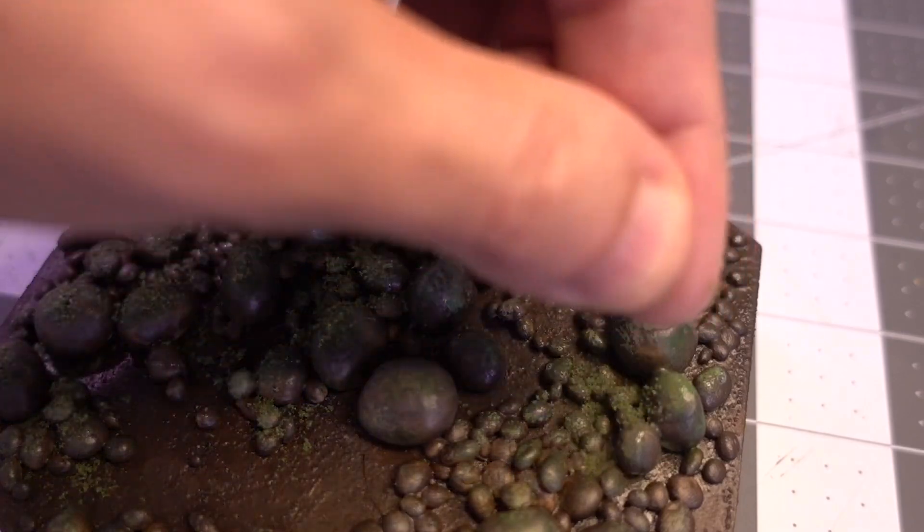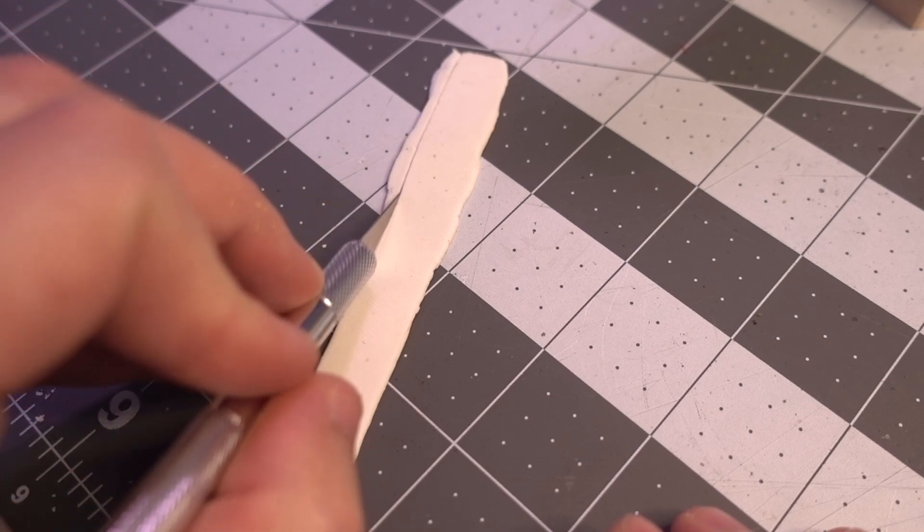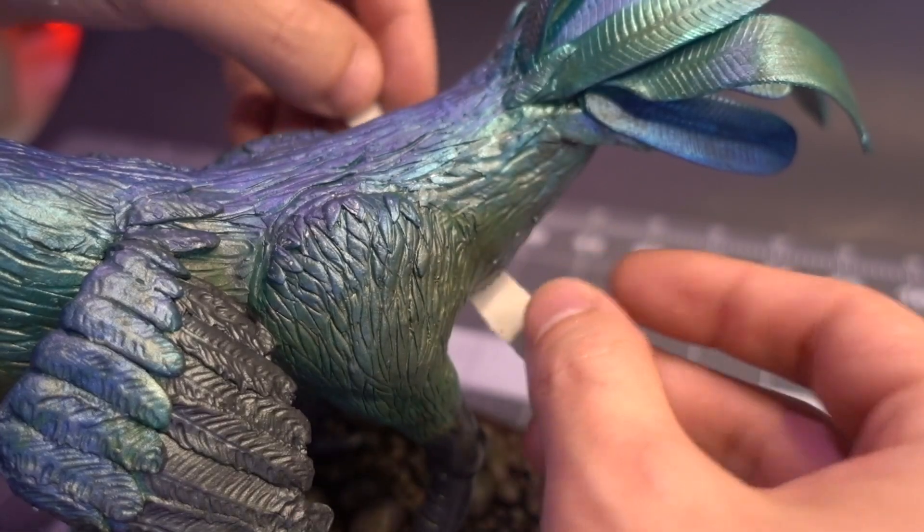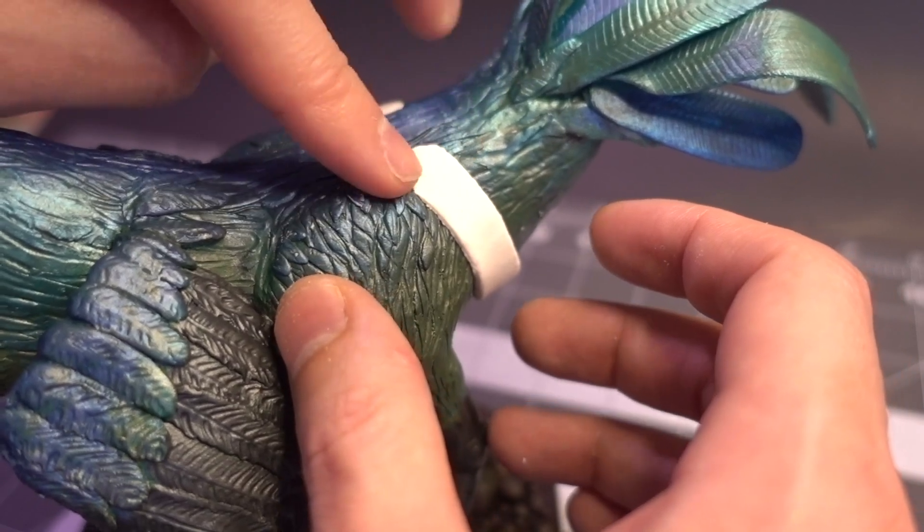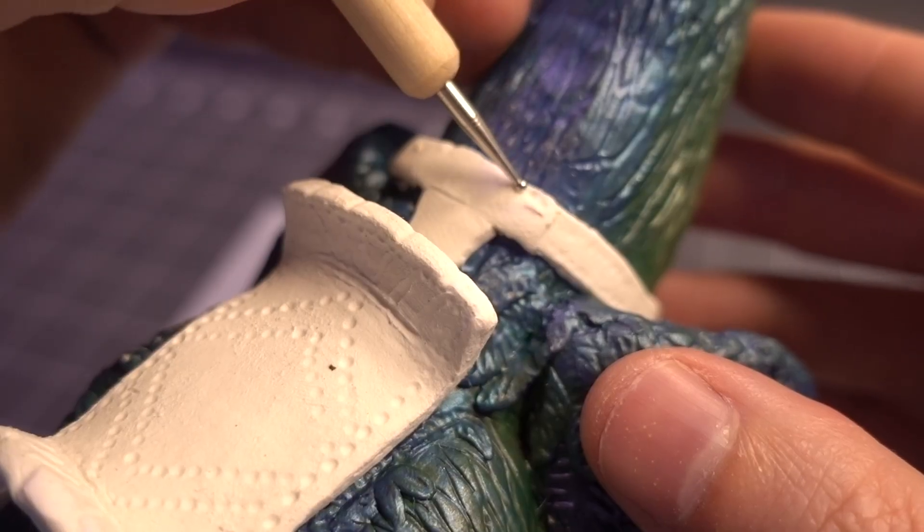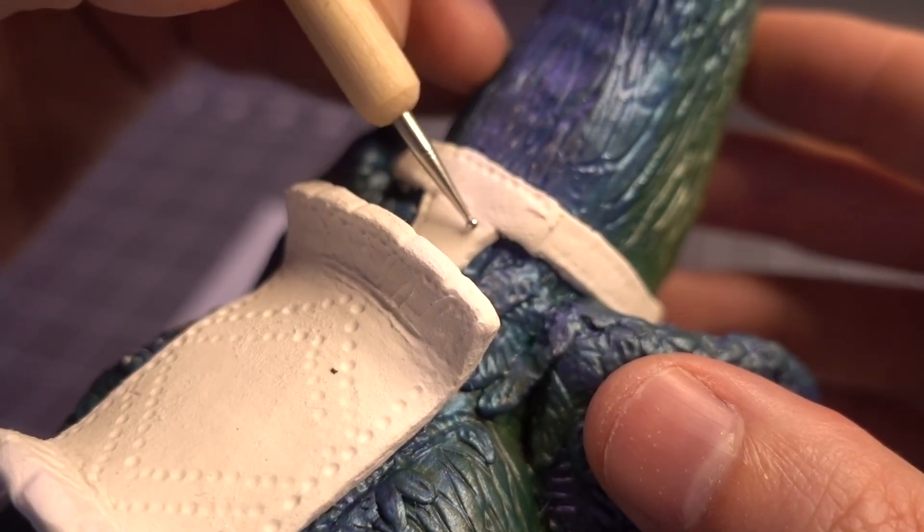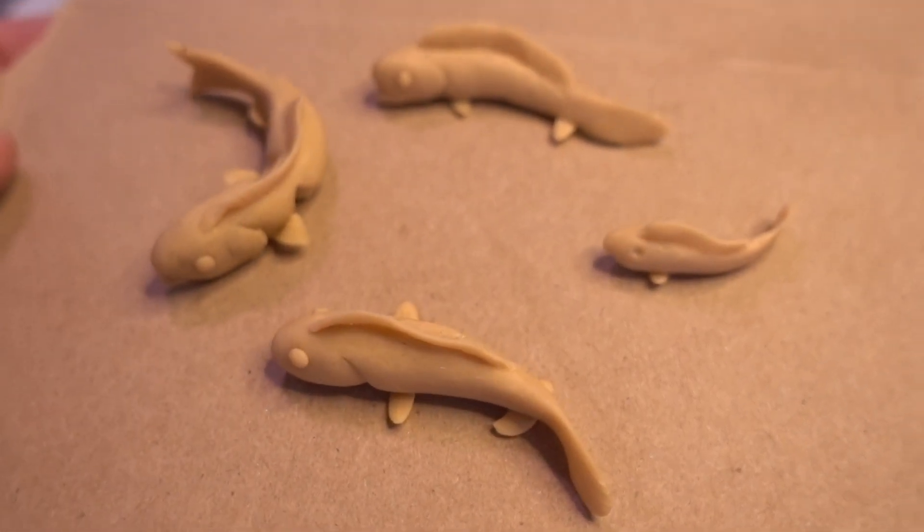By now the saddle was dry, so it was time for the rest of the leather hardware, for which I cut up these thin strips of air-dry clay and pressed them into place. For texture, I used the handle of my X-Acto knife, as well as a ball-tip stylus. And while it dried, I made a few more fish, then painted them.